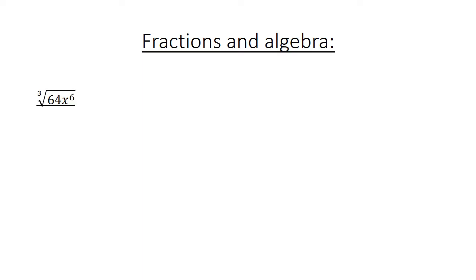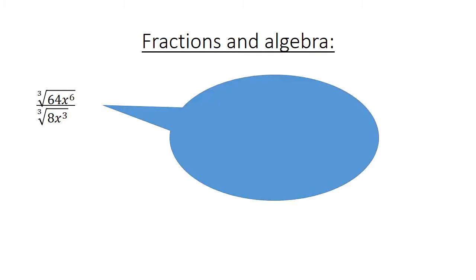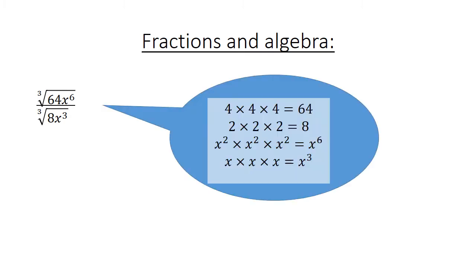Fractions and algebra: the cube root of 64x to the power of 6 divided by the cube root of 8x to the power of 3. 64 is 4 times 4 times 4, and 8 equals 2 times 2 times 2. x to the power of 6 equals x squared times x squared times x squared, and x to the power of 3 equals x times x times x. Now we simplify: the cube root of 64x to the power of 6 equals 4x to the power of 2, and the cube root of 8x to the power of 3 equals 2x, which gives 4x squared over 2x, equal to 2x.